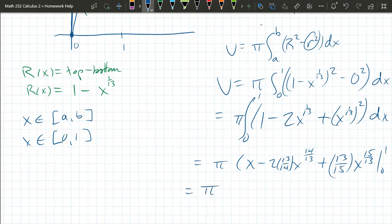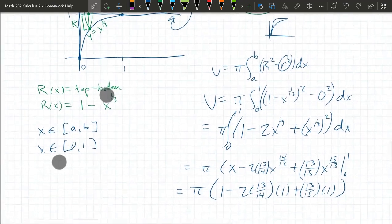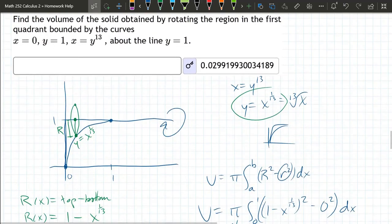So these are really nice endpoints. So I can plug them in very quickly. When you plug in 0 here, you're going to get 0, which is nice. But we plug in 1. We have 1 minus 2 times 13/14ths. Now 1 to any power is 1. So those x's just disappear. Times 1, plus 13/15ths times 1. And this number here, if you get a decimal, we'll see that up top in a second. Right here. So that should be our volume.